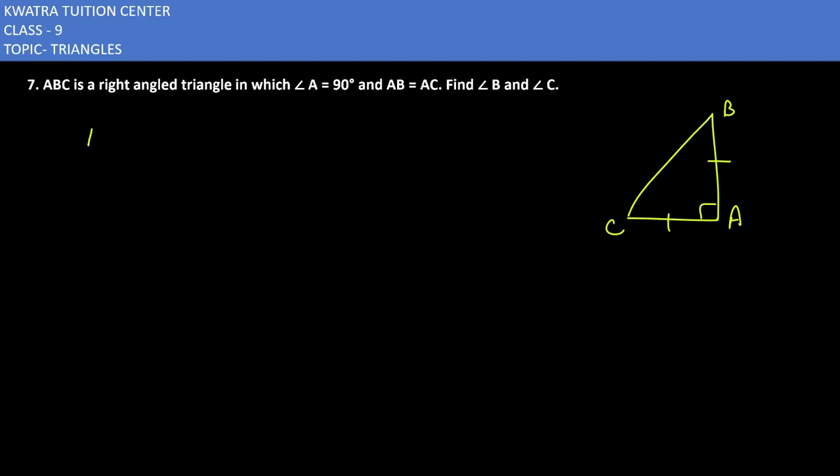As we have learned the condition that AB is equal to AC, then the opposite angles would be equal to each other. The opposite angles of equal sides are always equal. So I can say that angle C is equal to angle B.